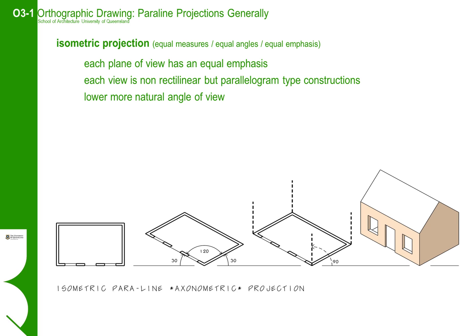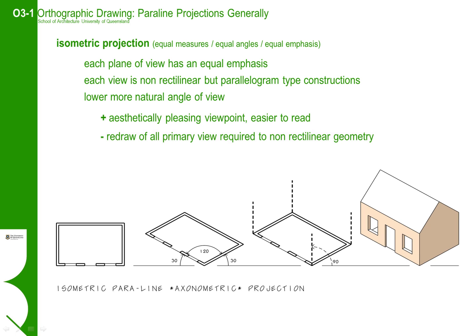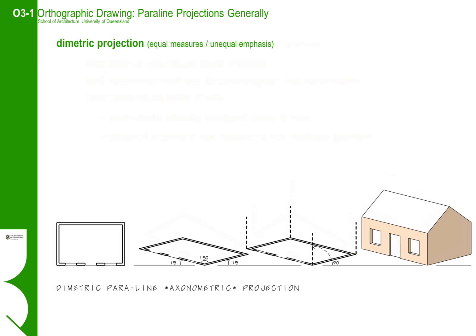The plus points for an isometric view are mainly the aesthetics of the viewpoint, making it easier to read. However, it does have drawbacks in that they require more construction and take longer to produce because of the non-rectilinear plan geometry.